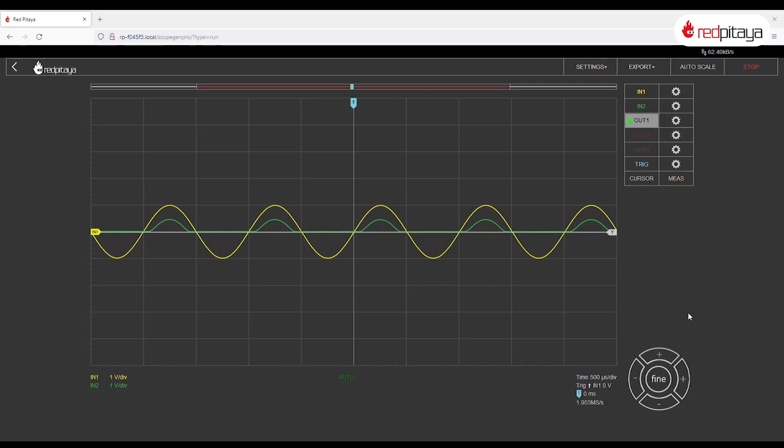If diodes block current in one direction but conduct electricity in the other, shouldn't the sine wave be rectified? Shouldn't it be zero in negative phase and the same as input in the positive one? Well, yes. Yes, but...